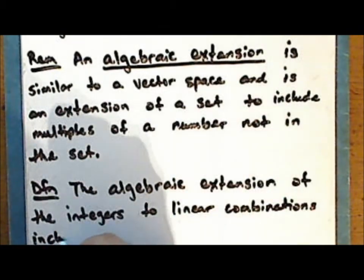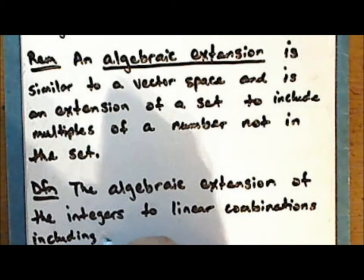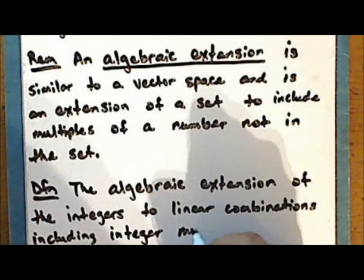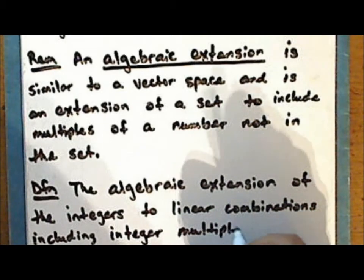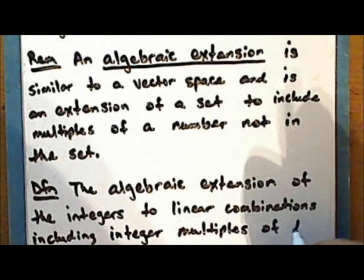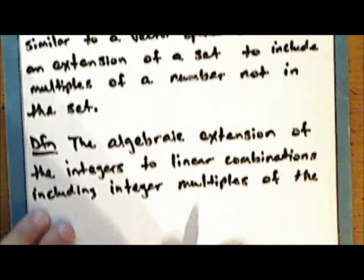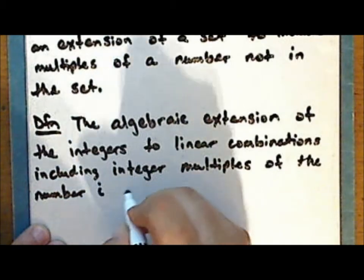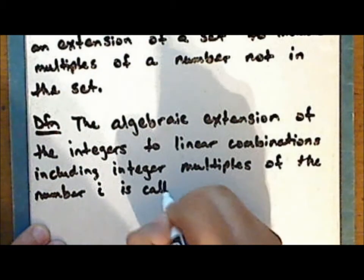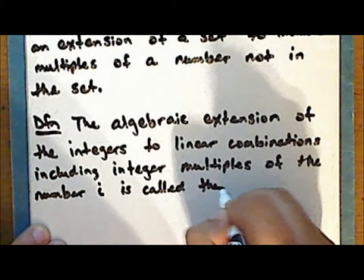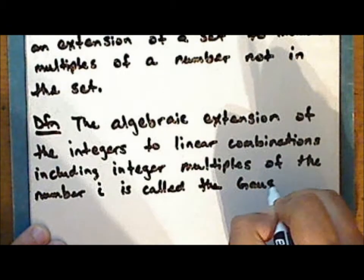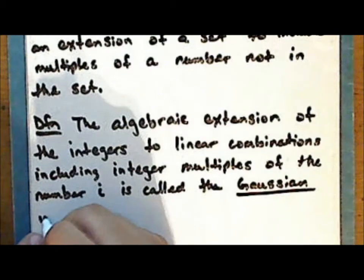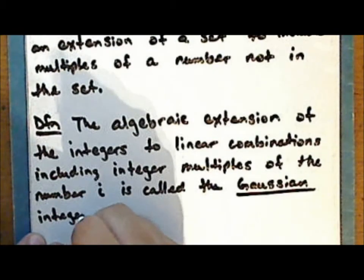And so the number alpha, which is of the form a plus b times i, is an algebraic integer. Now this number is a linear combination which includes a multiple of the number i. We have a name for such a linear combination.